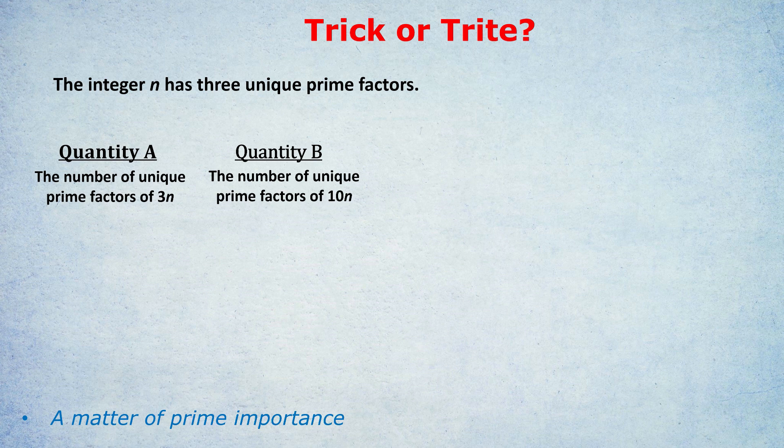Now, there's two reasons why people would think that quantity B has to be bigger. First, we're multiplying by 10 compared to multiplying by 3. And straight away, people would think, well, quantity B is going to be a bigger number, because we're doing 10 times n, rather than 3 times n.